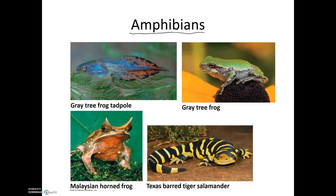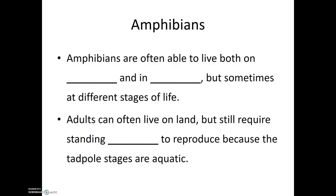Even though adult amphibians are able to live outside of water, their reproduction is still directly tied to water. They need to have open bodies of water such as streams or ponds in which to lay their eggs and for those eggs to develop. Adults can often live on land, but still require standing water in order to reproduce because the tadpole stages are entirely aquatic.